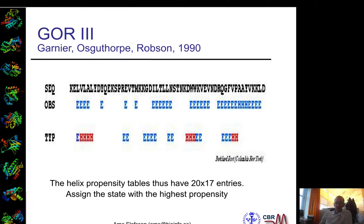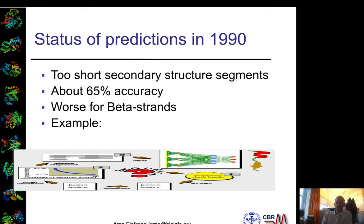It's actually not that bad for sheets here and there, but you can see there are also some problems — for example, predicting a single residue to be in a sheet in the middle is not very likely. In general, a problem observed around 1990 was that secondary structure predictions were too short. They had about 65% accuracy, with particularly bad beta sheet predictions. Helix prediction was better. That's why people wanted something more useful.